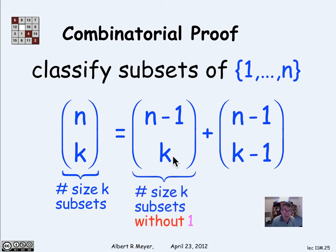What's n minus 1 choose k? Well, that's the number of size k subsets without a 1. I remove 1 from the numbers 1 through n. I'm left with the numbers 2 through n minus 1. And then I choose k of them to get a subset without 1.